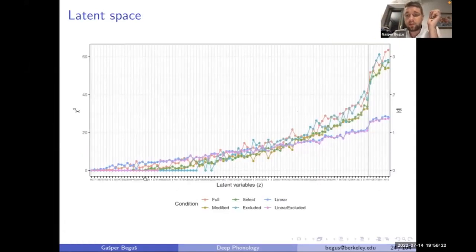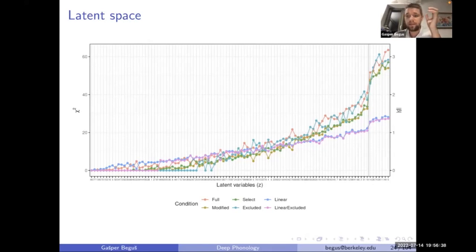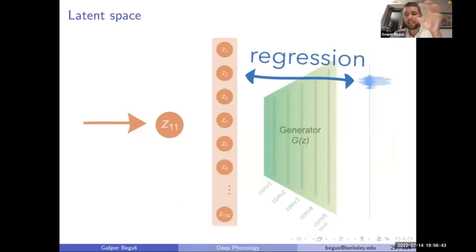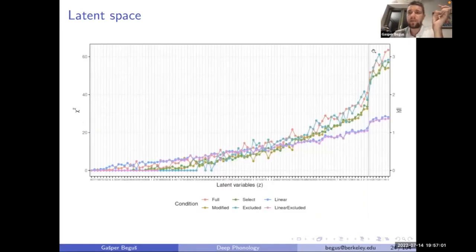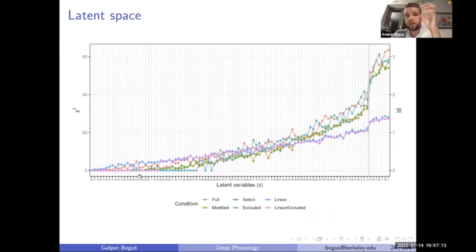With 100 variables, the network identifies the 11th variable as the one most strongly corresponding to 's' in the output. You see a somewhat discretized pattern — a couple of variables out of all 100 correspond more strongly to 's', while other variables show more distributed estimates. This provides some evidence of disentanglement, not yet full disentanglement, but later we'll see cases with really discretized representations where only a single variable corresponds to something linguistically meaningful.